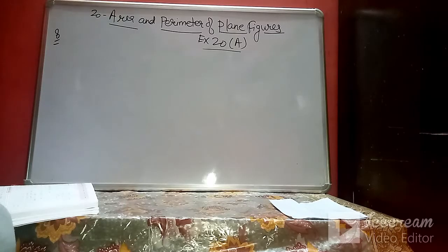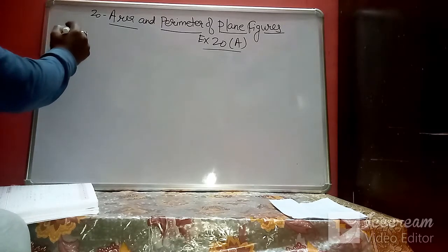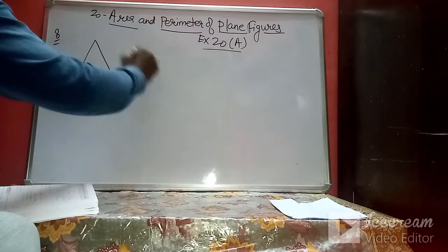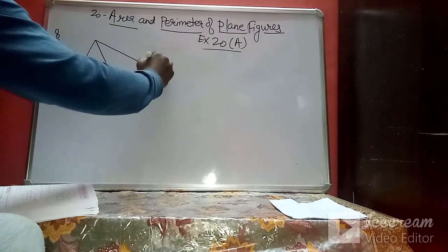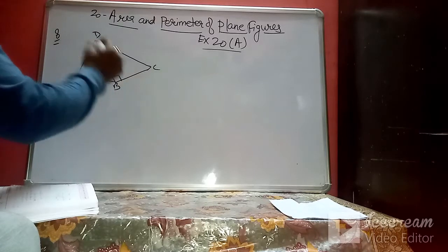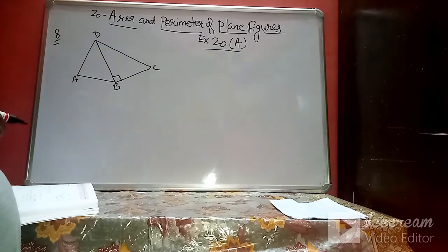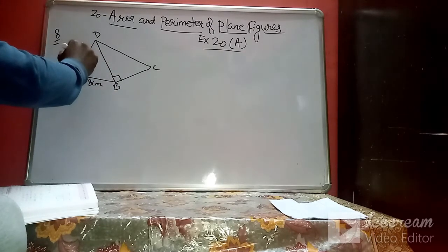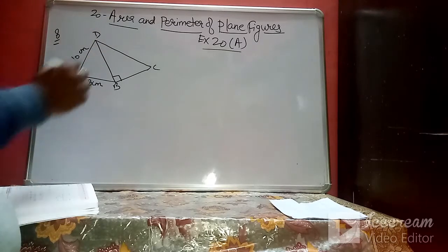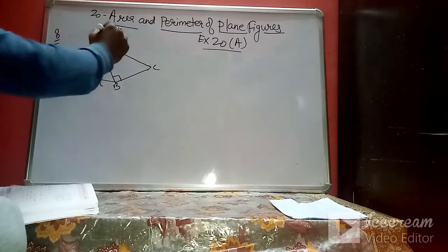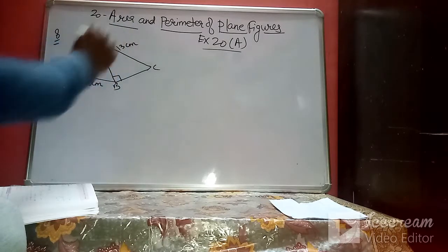In question number eight, it is given to find the area and perimeter of the quadrilateral ABCD. This quadrilateral consists of two triangles. One triangle is a right angle triangle and another is a simple triangle. It is given that AB is 8 cm, AD is 10 cm, BD is 12 cm, and DC is 13 cm.